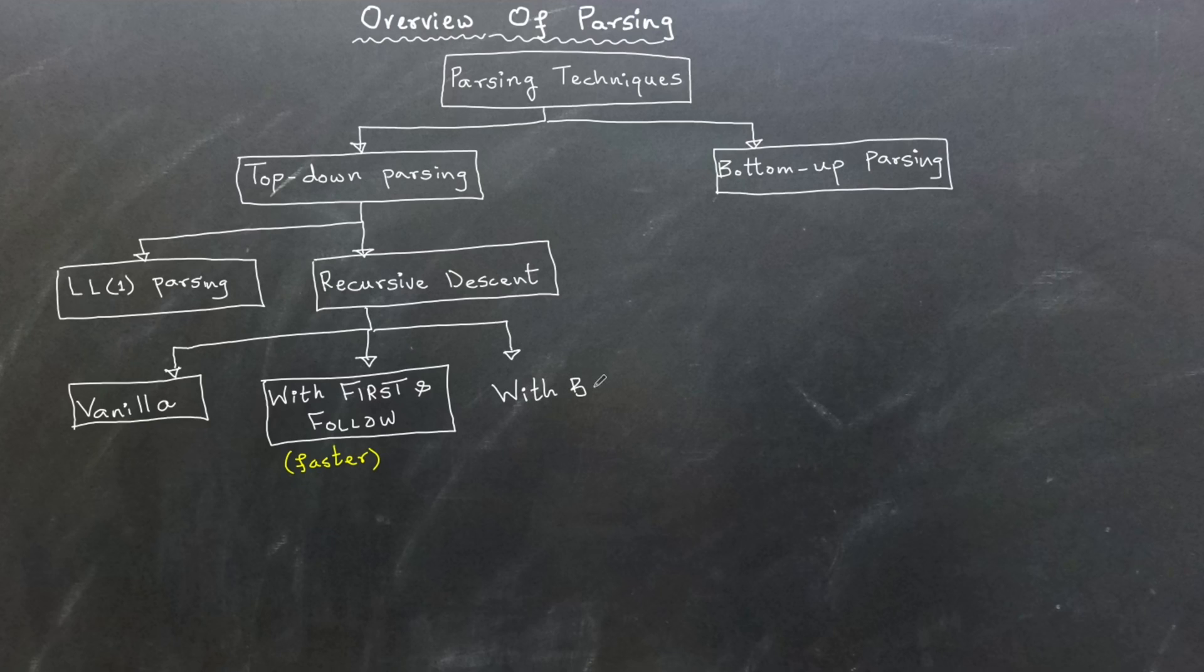The third variation is recursive descent parsing with backtracking, where the parser attempts alternative grammar rules when a parsing decision fails. While backtracking can be computationally expensive, it is especially useful for handling ambiguous grammars.